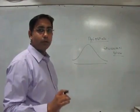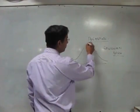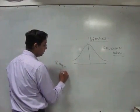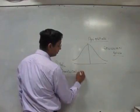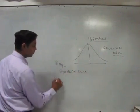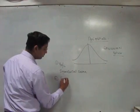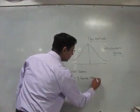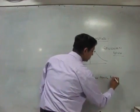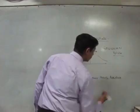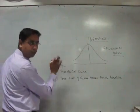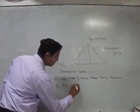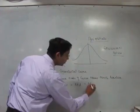Please remember there are 5 important points asked in MCQs. First, it is a bilaterally symmetrical curve. Second, the two ends of the curve never touch the baseline — you can see that this curve never touches the baseline. Third point, the mean is equal to the median is equal to the mode.